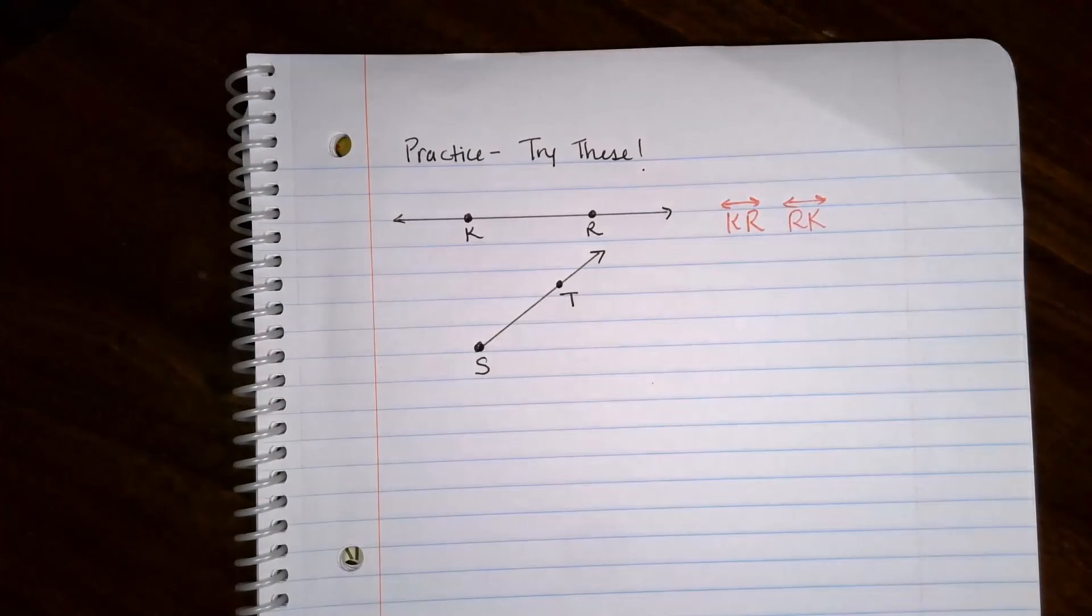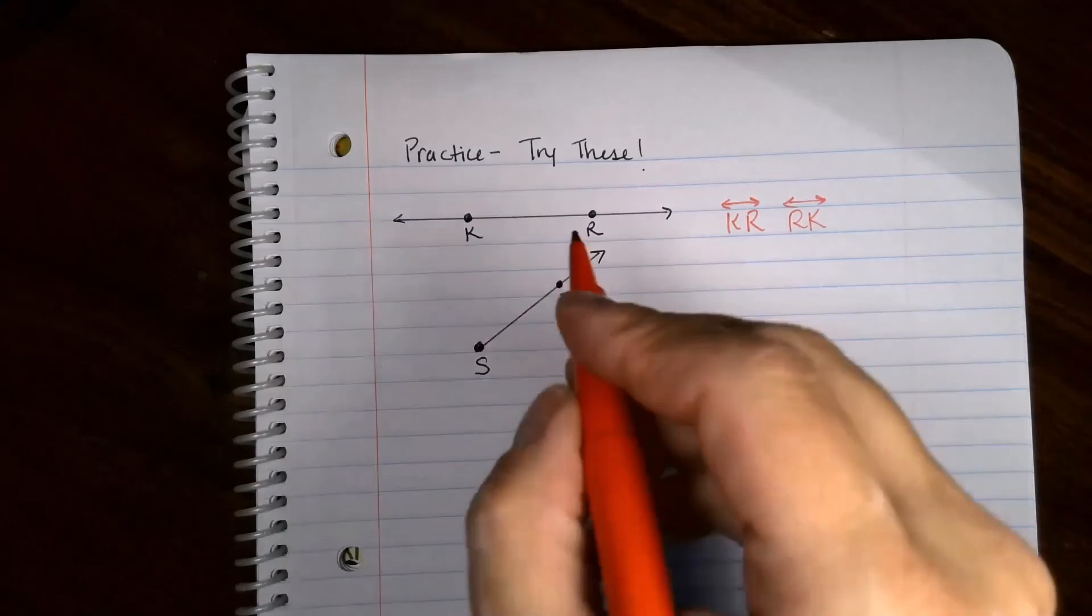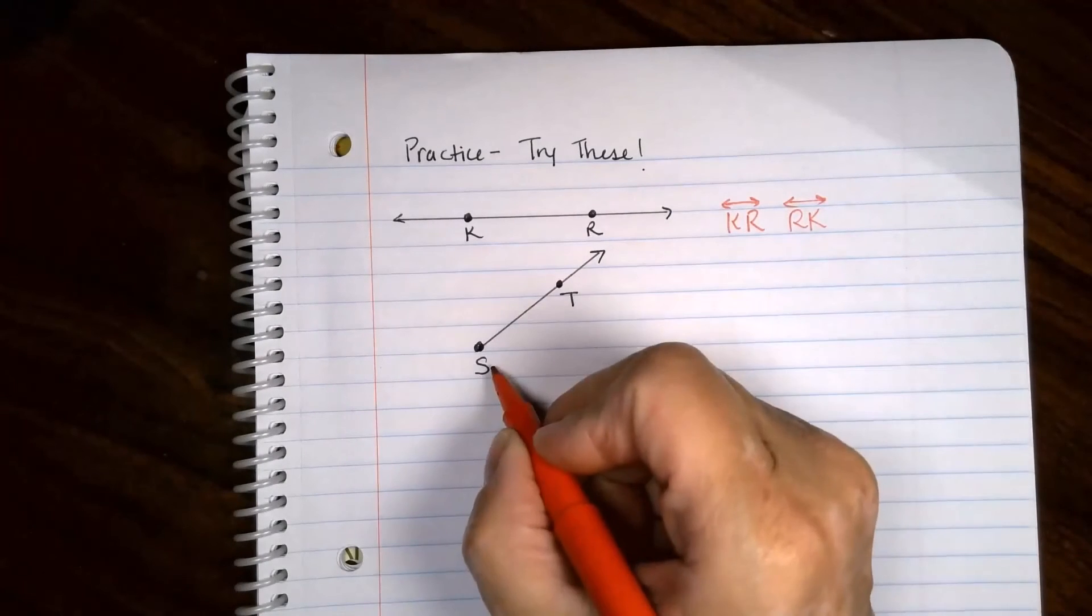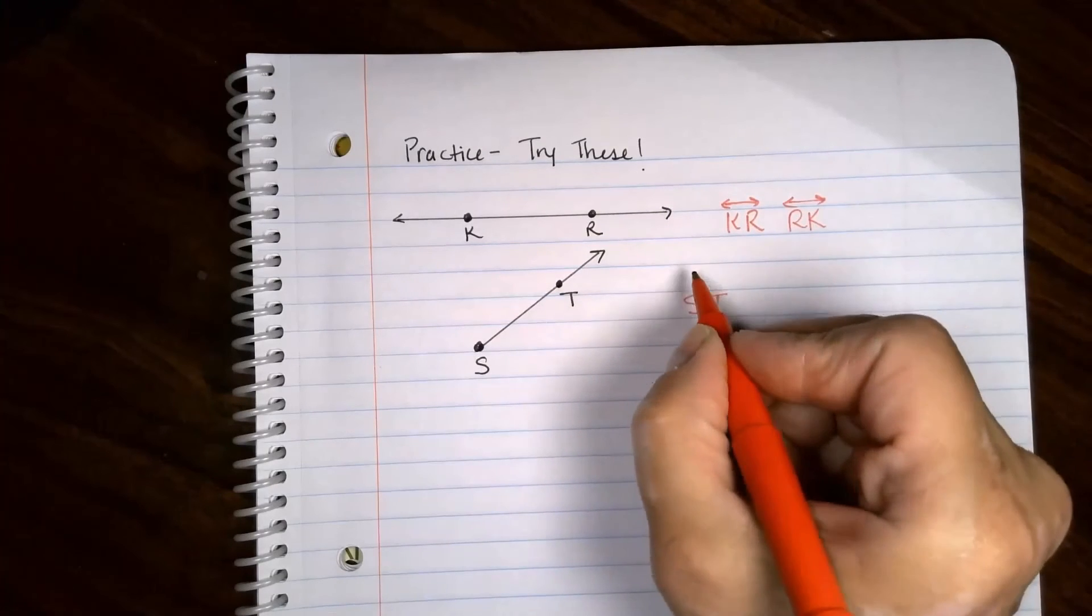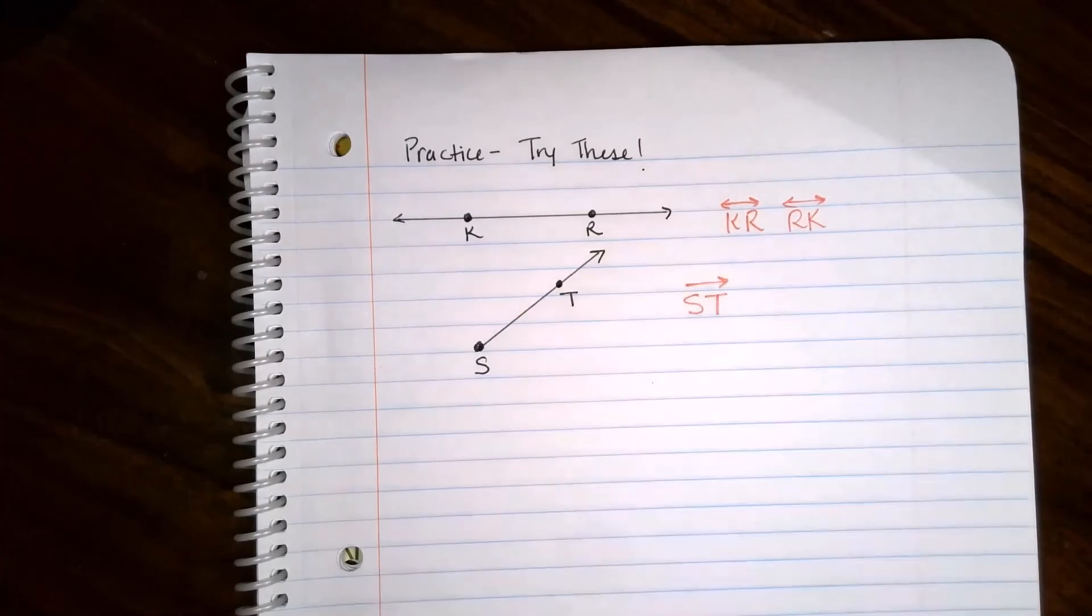Okay, that's the drawing. You name it. This is a ray and this is the initial point. There's only one possible answer and that is ST with a little symbol over the top.